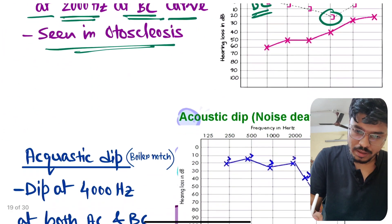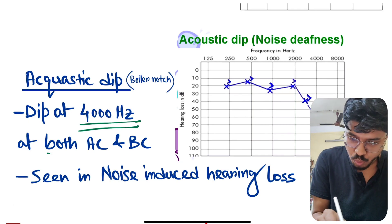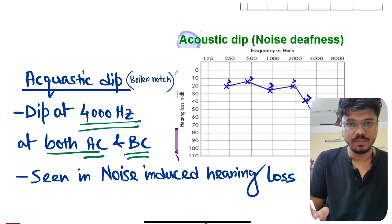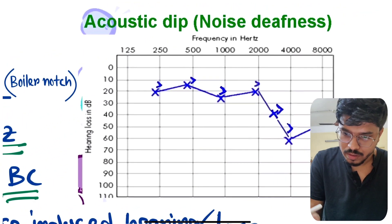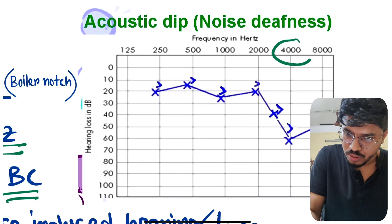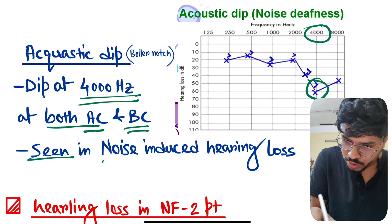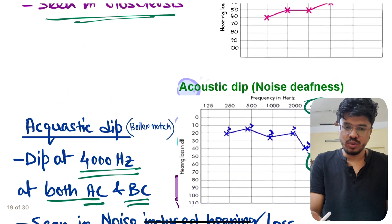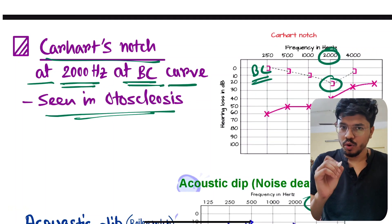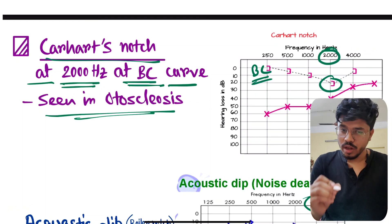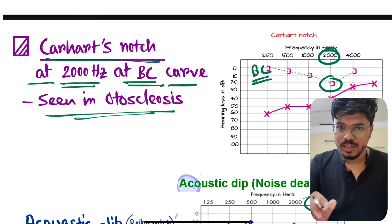The acoustic notch is seen at 4000 Hz in both air conduction and bone conduction curves. It is seen in noise-induced hearing loss. So: Carhart's notch in otosclerosis at 2000 Hz only in BC, whereas the acoustic notch is at 4000 Hz in both AC and BC.